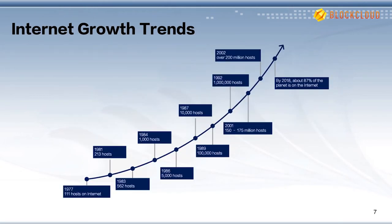Since it was born, the Internet has grown dramatically, from connecting four university nodes to billions of users. Today, about 87% of the planet is on the Internet.